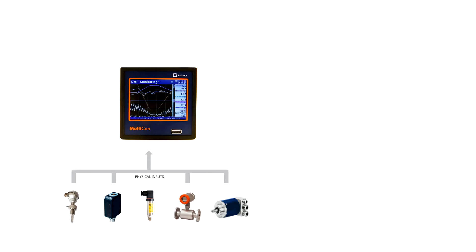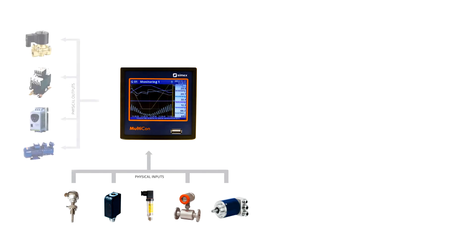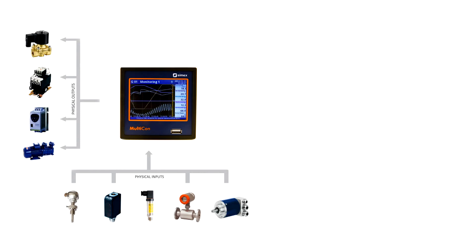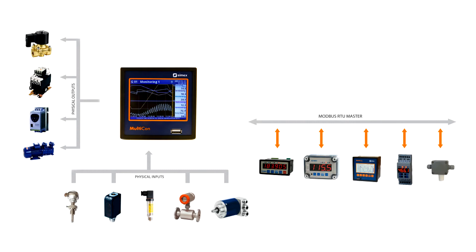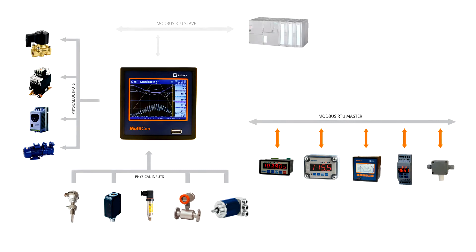Multicon CMC allows you to manage an extensive network of sensors, actuators, and other devices. In addition, you can connect it to devices in independent networks. Thanks to the Modbus RTU protocol, Multicon can control these devices and record their data, or act as a slave device itself.